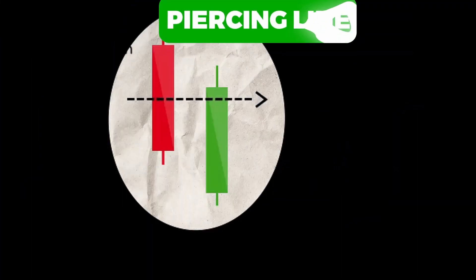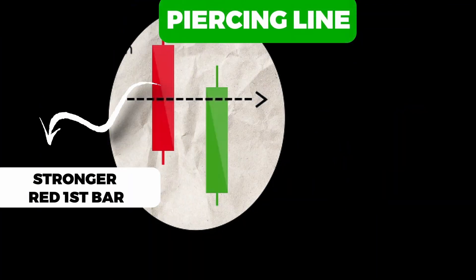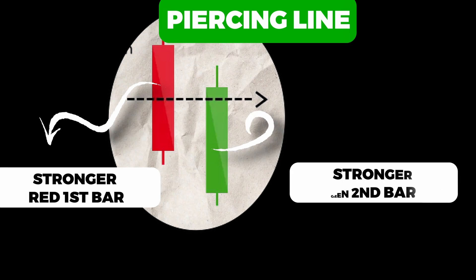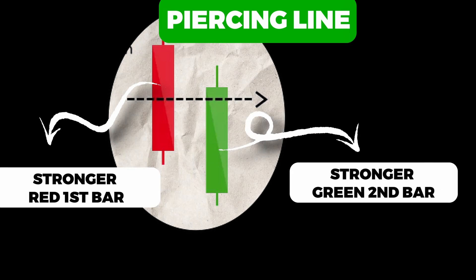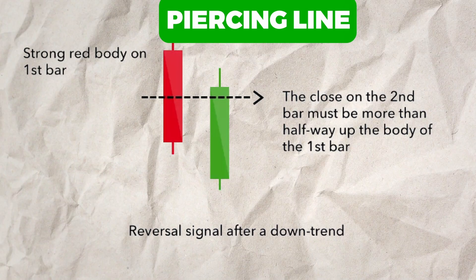The piercing line is a two-day pattern starting with a long red candle followed by a long green candle. The green candle opens lower than the red's close but closes more than halfway above the red body. This pattern indicates a shift from bearish to bullish sentiment.